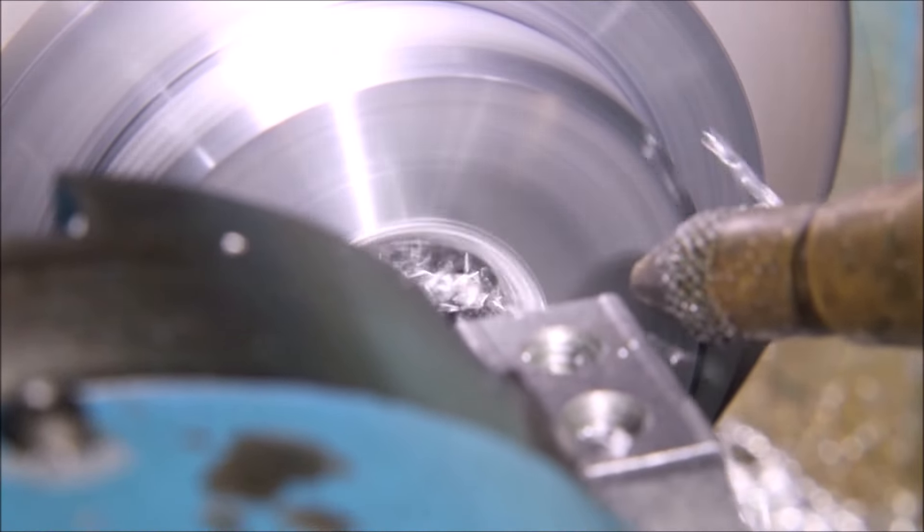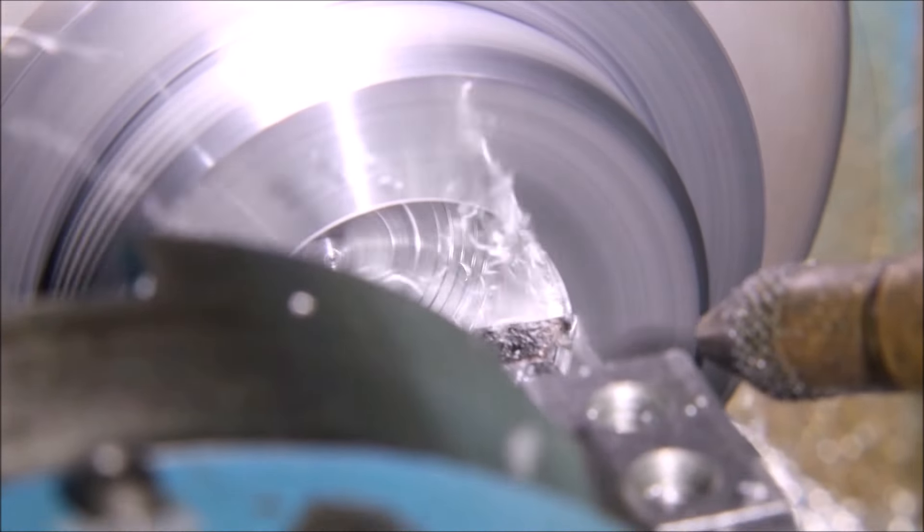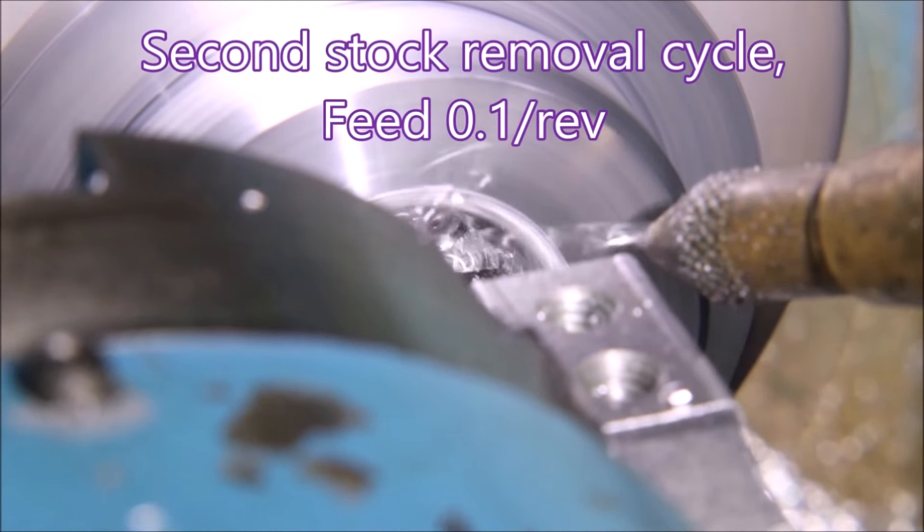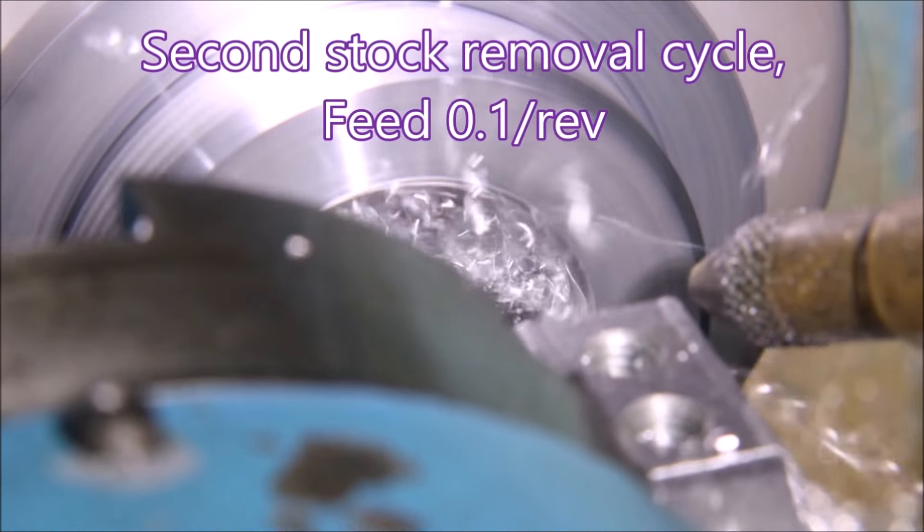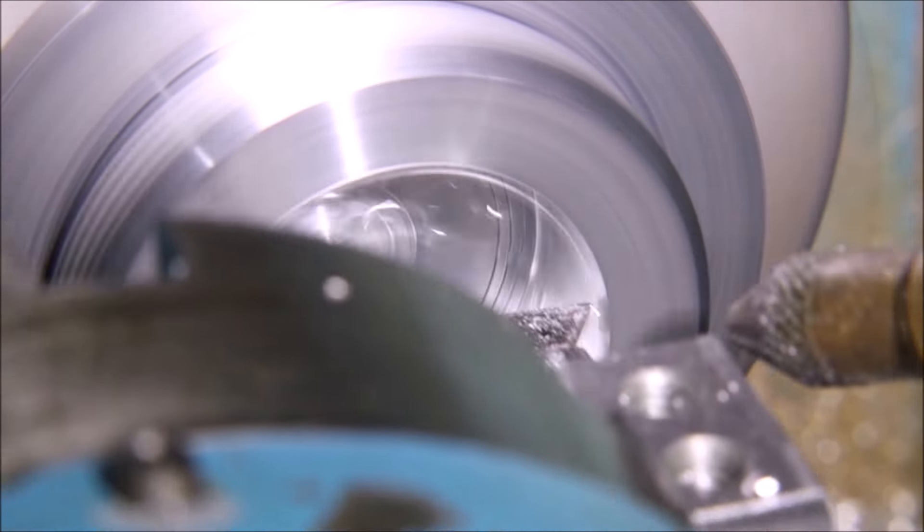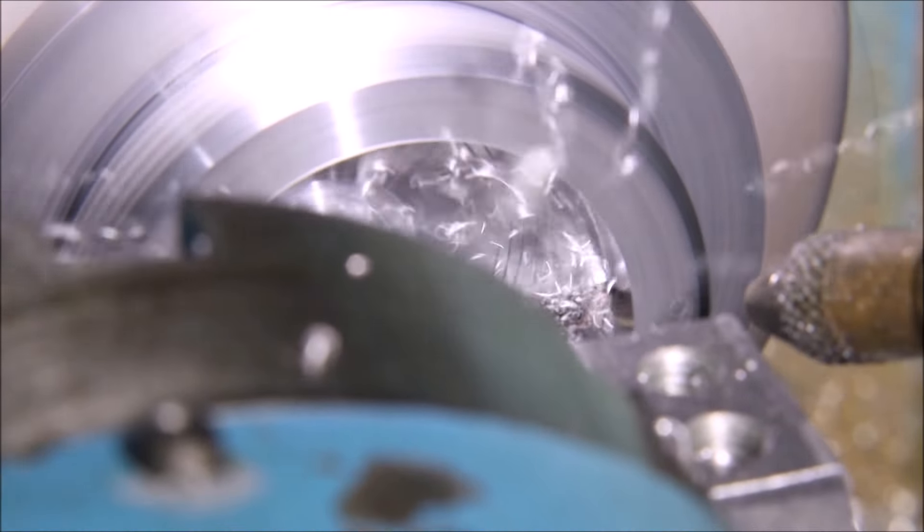I used two separate stock removal cycles to open up this bore. It easily gives you the opportunity to change the parameters that you're using. Like in this one I changed from a feed of 0.12 to a feed of 0.1. Not much but it was easy to do.